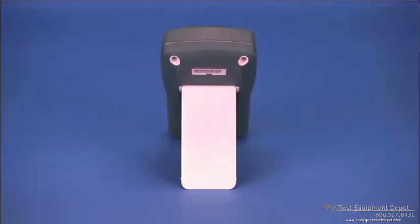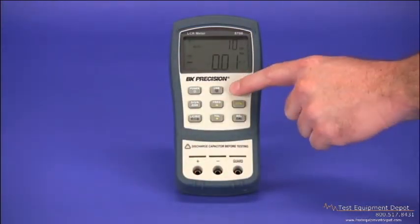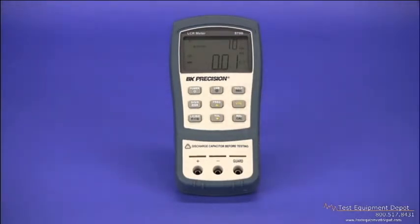The back of the meter has a convenient tilt stand that securely holds the meter upright when being used during bench applications. Even when interfacing with the meter by pressing any of the function buttons, the meter's tilt stand holds the meter upright.